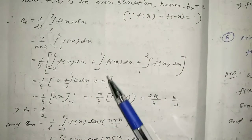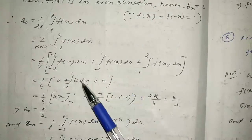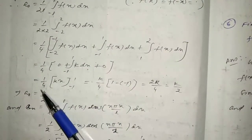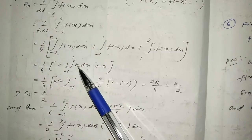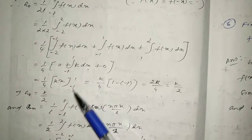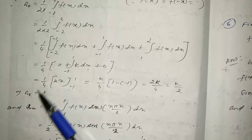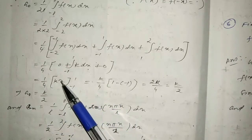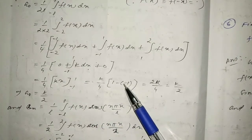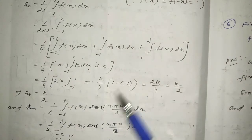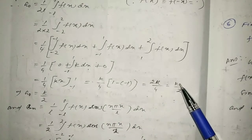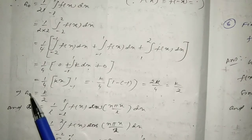Only from -1 to 1 does f(x) = k. So a0 = (1/4) integral from -1 to 1 of k dx = (k/4) times [x] from -1 to 1 = (k/4)(1 - (-1)) = (k/4)(2) = k/2. Therefore a0 = k/2.